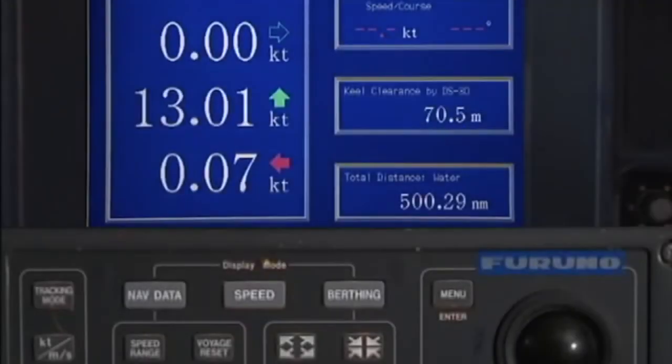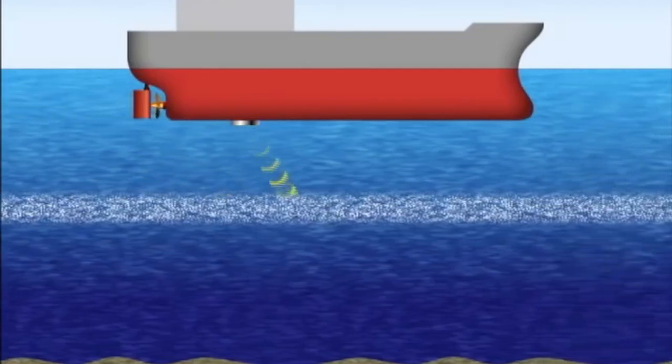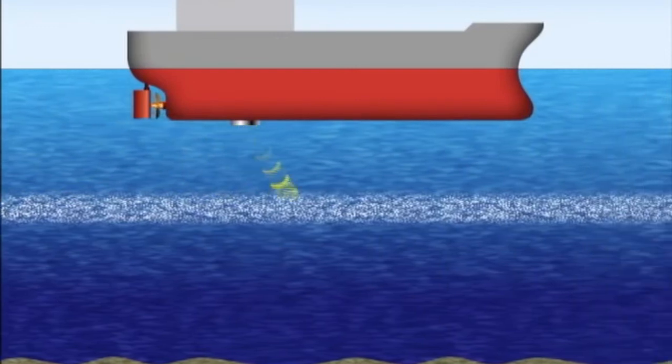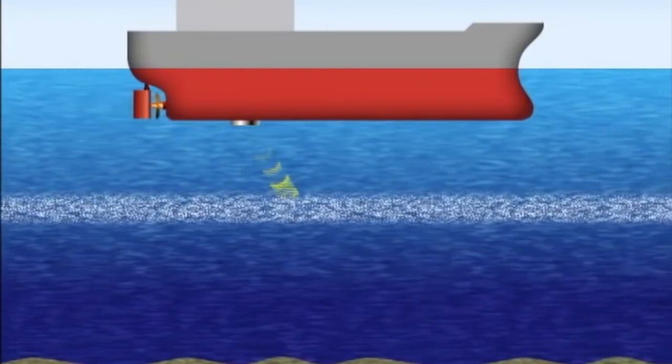The Doppler sonar speed log launches a supersonic wave into the sea and uses the reflected signal from suspended matter. It calculates speed by detecting the Doppler shift of the reflected signal.